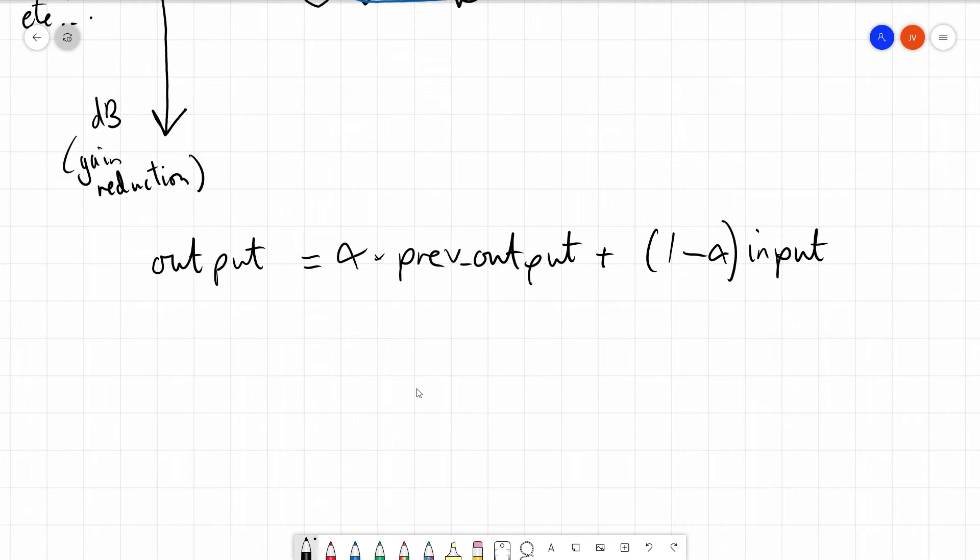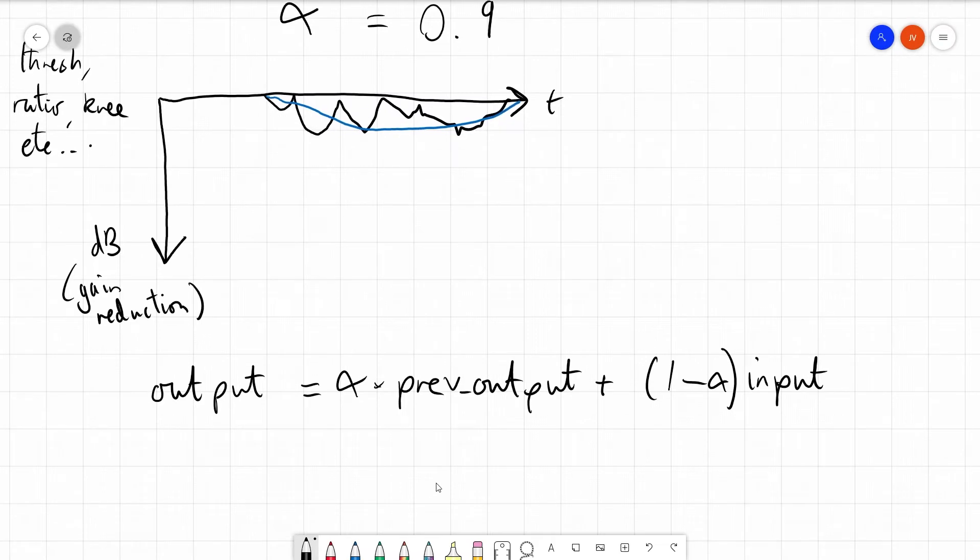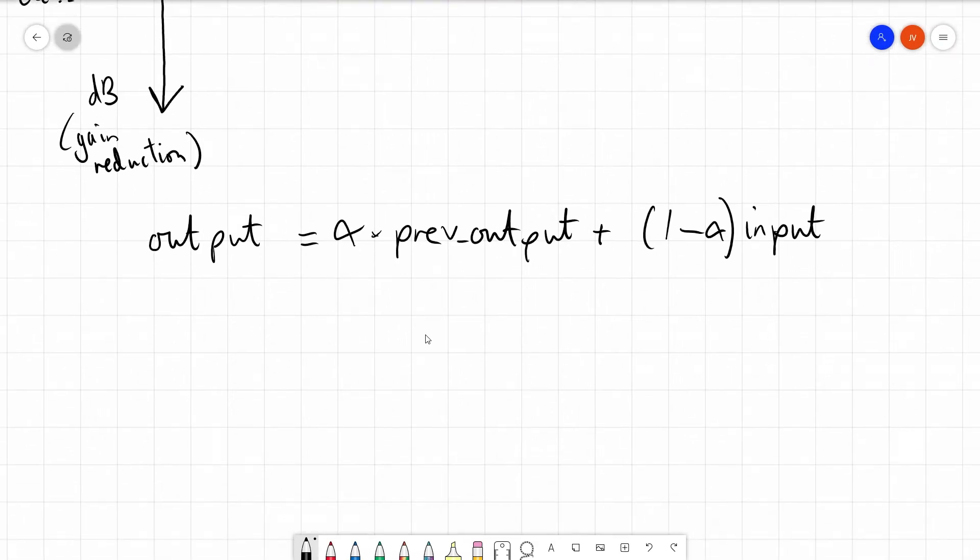But of course, the low pass filter is not applied to the audio we hear. It's being applied to the gain reduction signal. And of course, in a different type of compressor, this might be being used for envelope detection, but we're using a peak compressor as an example.